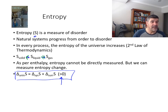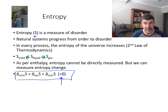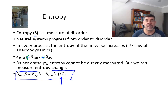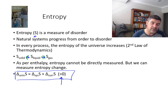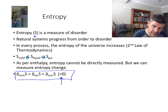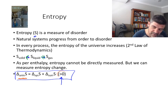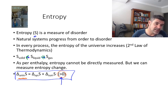Just like enthalpy, we can't directly measure entropy, but we can measure the change in entropy — and that's one of the things we're going to be looking at over the next few videos. As a general organisational tool, this equation is quite useful: the change in the entropy of the universe, which must always be greater than zero, is equivalent to the sum of the change in entropy in the system and the change in entropy of the surroundings.